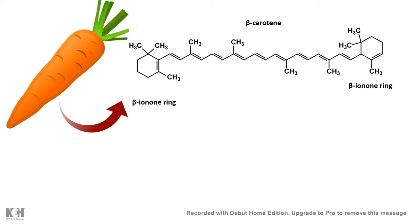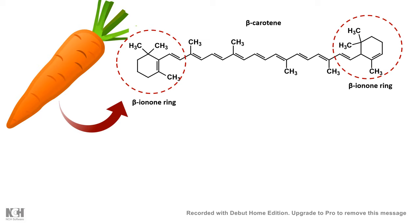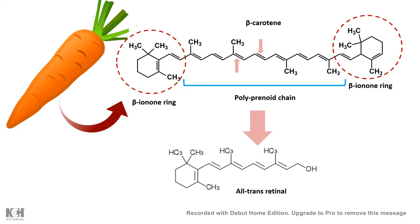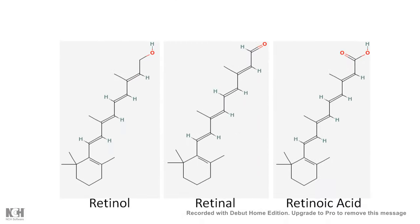This beta-carotene is processed in several ways. Let us understand the structure of beta-carotene. It has two beta-ionone rings marked in this red circle, and a polyisoprenoid chain joining these two beta-ionone rings. This polyisoprenoid chain would be cleaved enzymatically in a specific region to give rise to retinol — this is basically vitamin A. So from one beta-carotene, essentially two molecules of vitamin A can be produced.